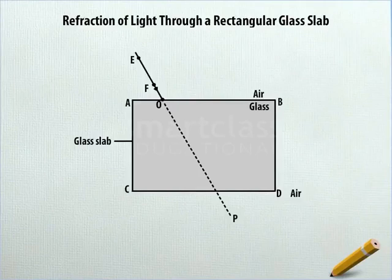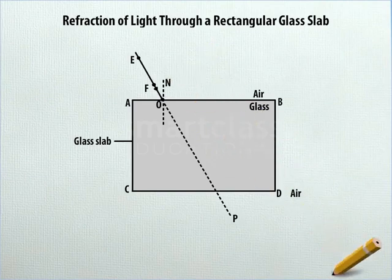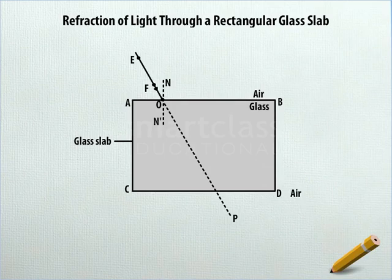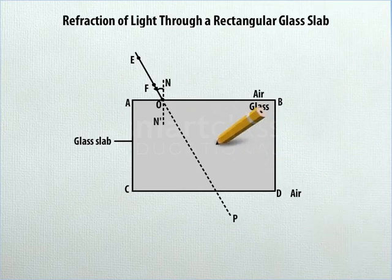From the upper part of AB, draw a straight dotted line perpendicular to AB that crosses the point O. Label the upper end of this dotted line as N and the lower end as N', both in uppercase. After that, between the line segments FO and NO, draw an arc to indicate the angle of incidence at the first surface and label it as I1.